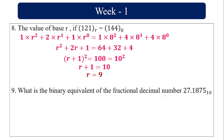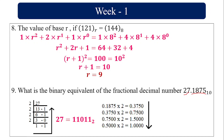What is the binary equivalent of the fractional decimal number 27.1875? Divide 27 by 2 to get the integer binary part: 11011. Multiply 0.1875 by 2 repeatedly: 0.375, 0.75, 1.5, 1.0 — stopping when the fractional part reaches 0, giving 0011. So 27.1875 in binary is 11011.0011.